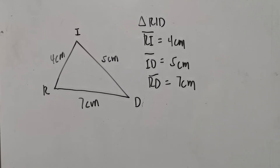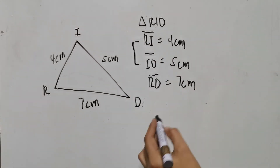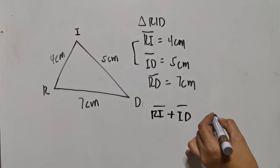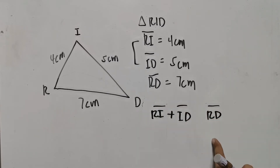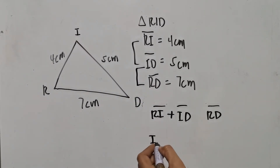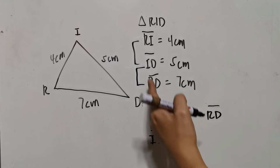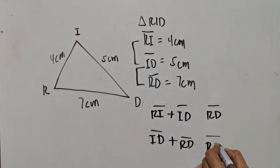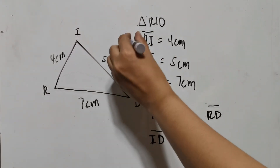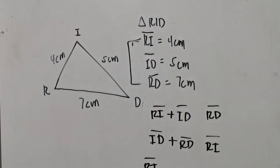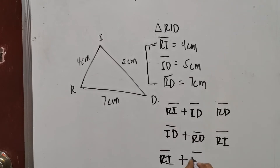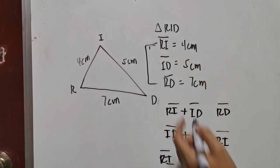Let us add any two sides of this triangle and compare to the third remaining side. It should be greater than the third side. So first, RI plus ID compared to RD. Second, ID plus RD compared to RI. And the last one, RI plus RD compared to ID.